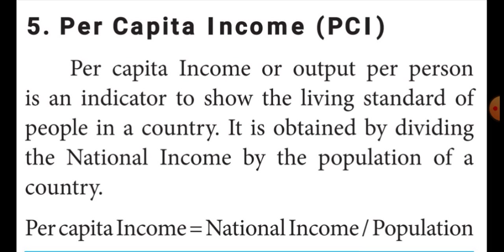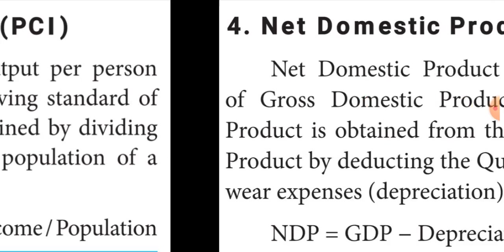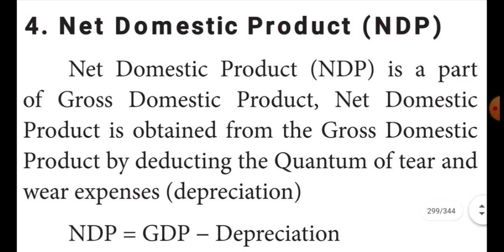The net domestic product is obtained from gross domestic product by deducting the quantum of tear and wear expenses. If we want to repair the damaged items and create new things, we need to spend some money. NDP is equal to GDP minus depreciation. That particular money is reduced — that is called net domestic product.